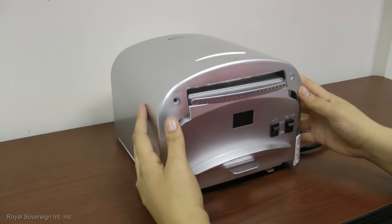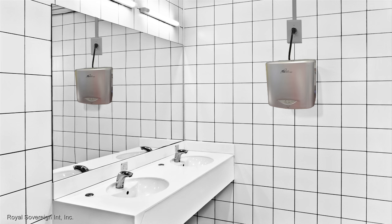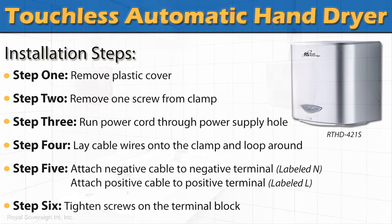Place the cover back onto the unit and tighten with screws. In a few easy steps the RTHD421S touchless automatic hand dryer is now ready to use.